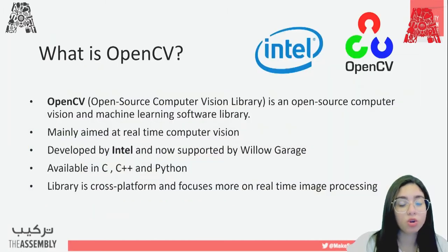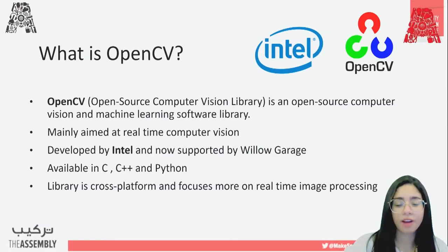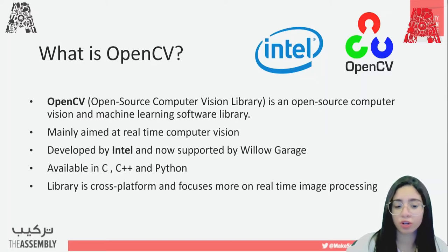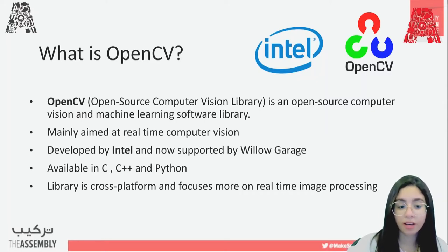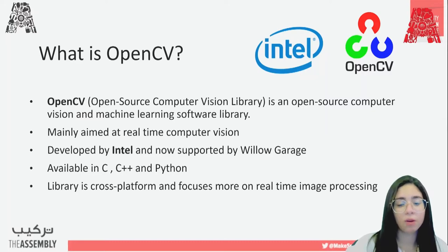Our workshop today uses a library called OpenCV. OpenCV stands for Open Source Computer Vision library, and as the name implies, it's used in computer vision and machine learning software. It is mainly aimed at real-time computer vision. It was developed by Intel and is now supported by Willow Garage. It's available in C, C++, and Python — we'll use Python today. It's a cross-platform library that focuses on real-time image processing.